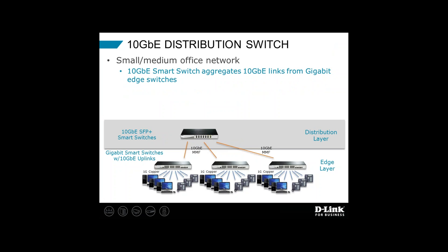Here's an example small or medium-sized office network using 10 gig in the distribution layer. At the edge we've got 24 and 48 port gigabit switches connected out to employees, workstations, IP phones, and printers. All that gigabit traffic gets aggregated by smart switches with 10 gig uplinks into the distribution layer. Here I'm showing an SFP+ smart switch taking in 10 gig links from the edge switches and aggregating all that traffic. If we're concerned about redundancy, we can add a second switch in the distribution layer, using protocols like ERPS (Ethernet Ring Protection Switching) or spanning tree.